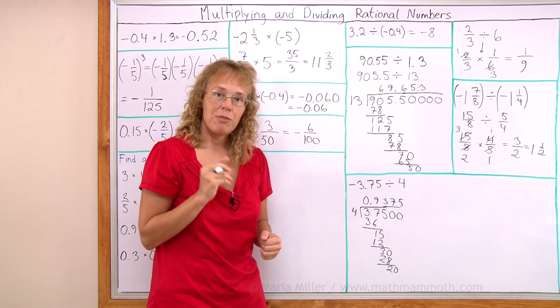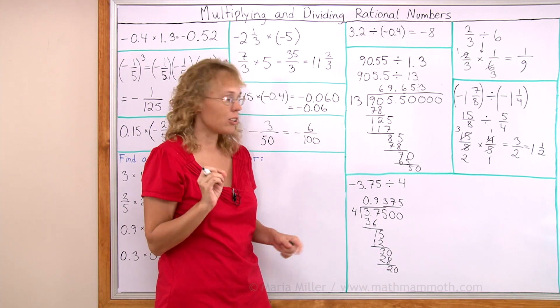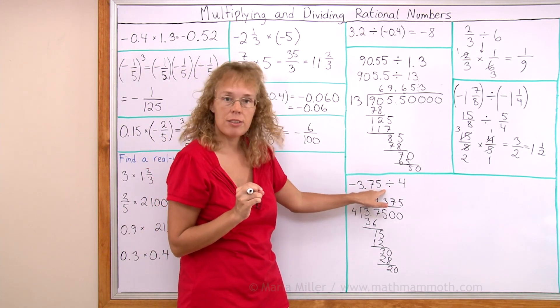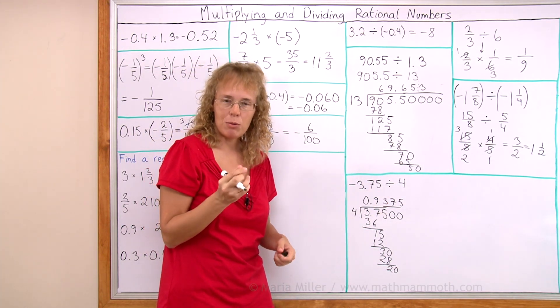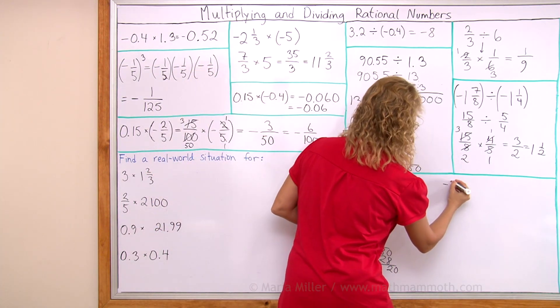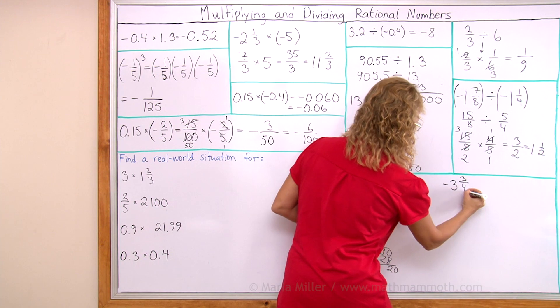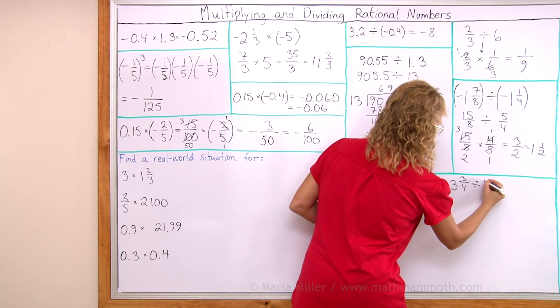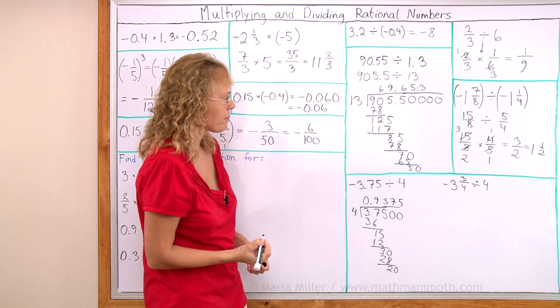Let's compare that if we do this division using fractions. Because this number is easy to write as a fraction. 0.75 would be 3 fourths, right? So this is actually negative 3 and 3 fourths divided by 4.